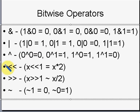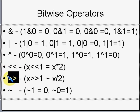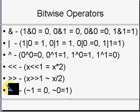The left shift operator shifts the bits left by one, which is equivalent to multiplying the number by two. The right shift operator shifts bits right by one, which is equivalent to dividing by two. The complement operator inverts all bits — every zero is substituted by one and every one is substituted by zero.